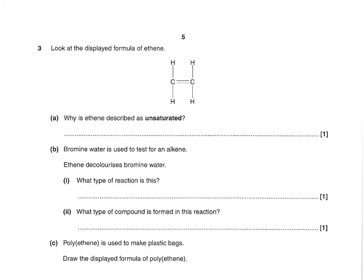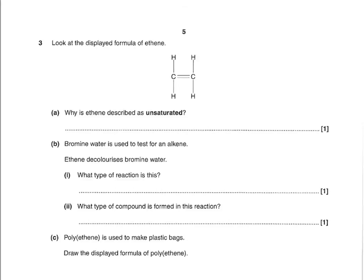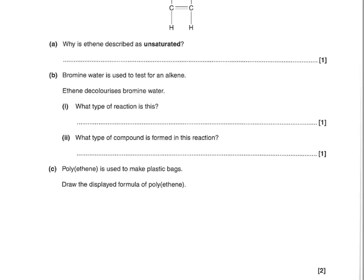Look at the displayed formula for ethene. Why is ethene described as unsaturated? That's simply because it contains a double bond. Bromine water is used to test for an alkene. Ethene decolorises bromine water. What type of reaction is this? That's known as an addition reaction — just addition. And what type of compound is formed in this reaction? That's a dibromo compound. You could also say a saturated compound for that mark.